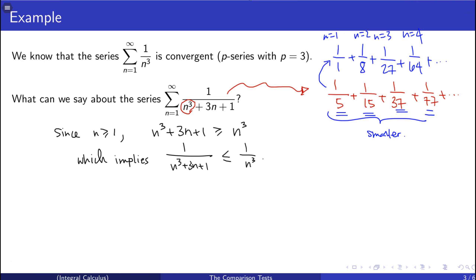Remember, the larger a denominator is for a fraction, the smaller the entire fraction will be, assuming your numerator is fixed — because you're dividing by a larger thing. So 1/(n³ + 3n + 1) is less than 1/n³, and we know that 1/n³ is convergent.